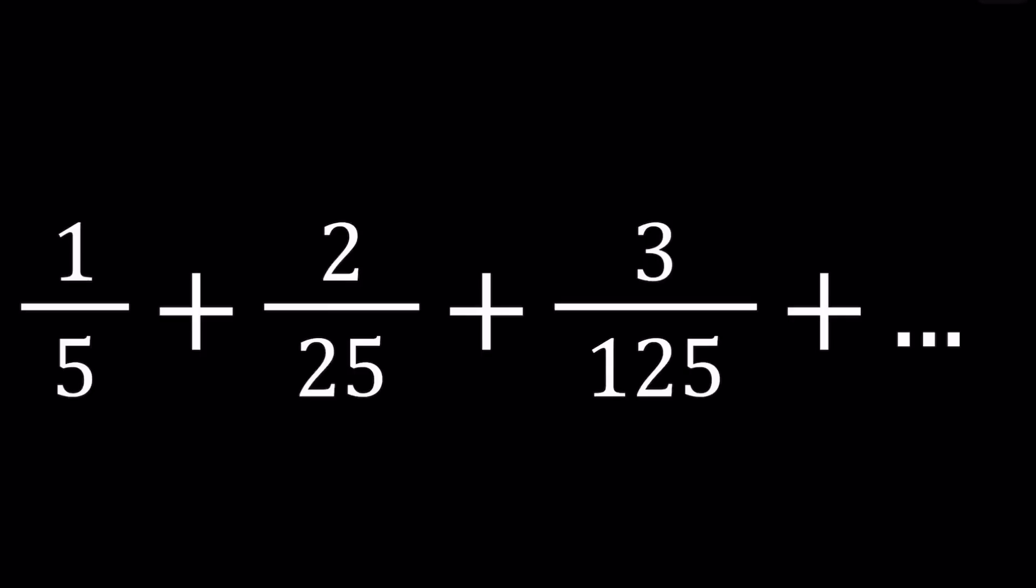Hello, everyone. In this video, we're going to be evaluating an infinite sum. We have 1 over 5 plus 2 over 25 plus 3 over 125, so on and so forth, where the numerators are consecutive positive integers and the denominators are powers of 5, starting with 5 to the first power.